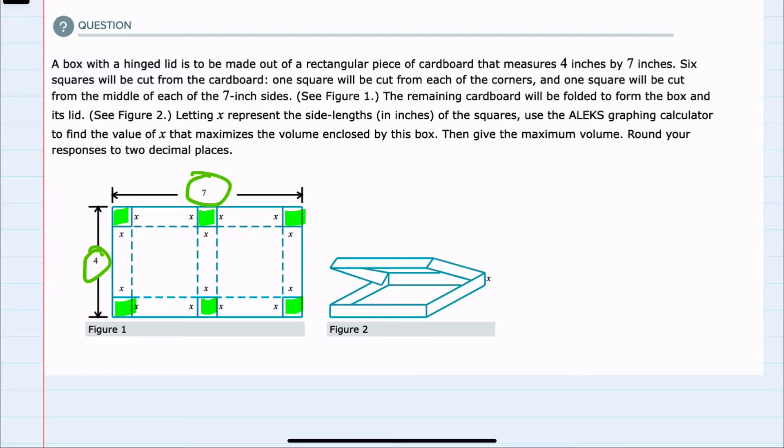Ultimately, we're going to be looking to maximize the volume of this box. For volume, I know that we will need length, width, and height of this box. So far, I have the height as x. I'll need to figure out what this length and width will be in order to calculate the volume. I'll start with the front of the box here, which I have shaded in blue.